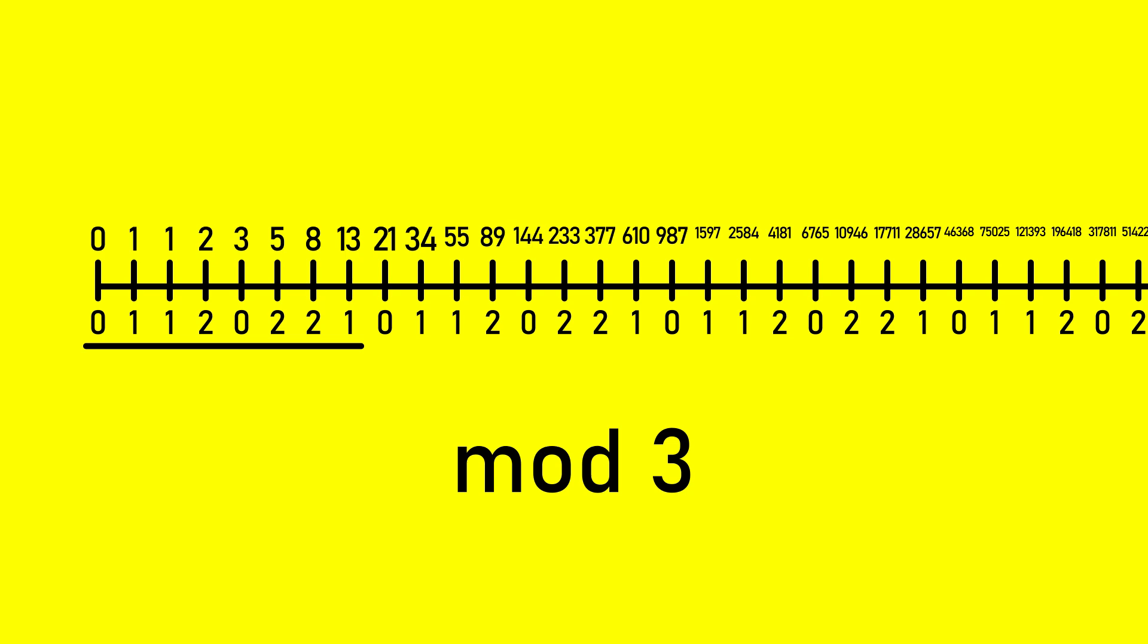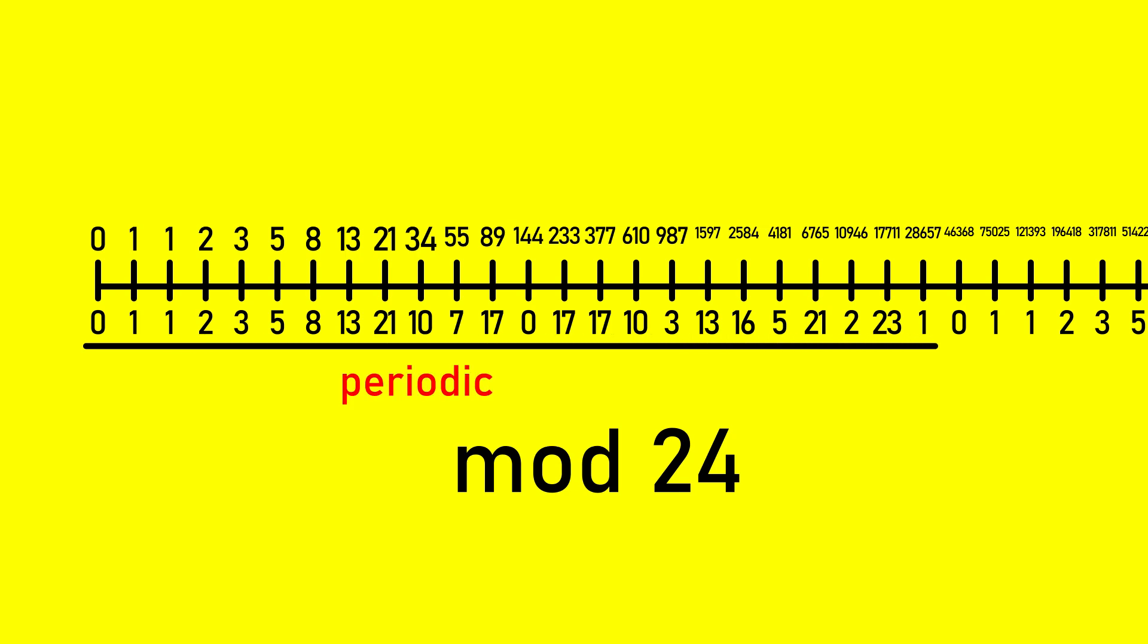This also works if we take the Fibonacci sequence mod four. The resulting looping part is zero, one, one, two, three, one. And it works for five, and six, and seven, and eight, and actually it works for every modulus, just like with the regular number line. Every modulus results in a sequence of looping remainders. These sequences are said to be periodic, and the length of each looping part of the sequence is known as the Pisano period.